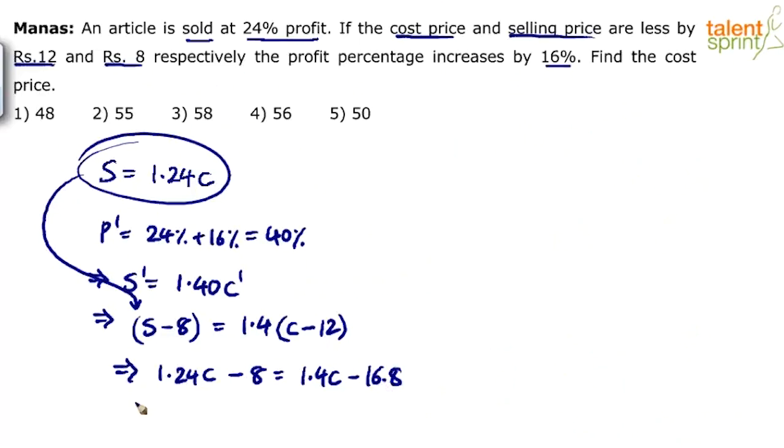That's it. One equation, one variable, solve for cost price and you get the answer. And yes, cut down a few steps. I mean you will not be writing this in the exam. You should directly know that profit is 140 percentage.